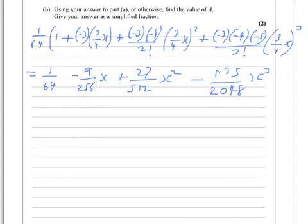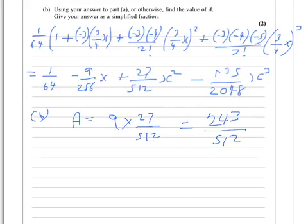So in total, our answer to what a is for part b, a equals 9 times 27/512, which is 243/512.